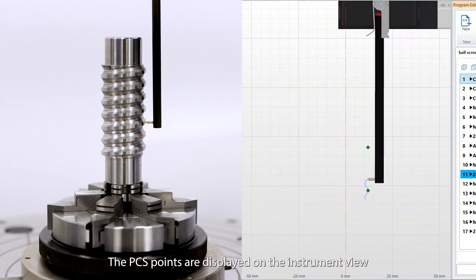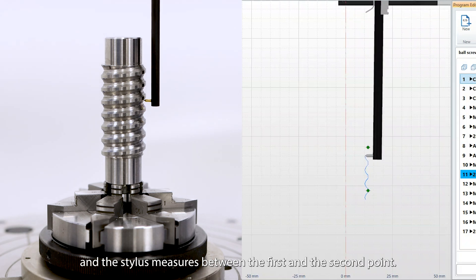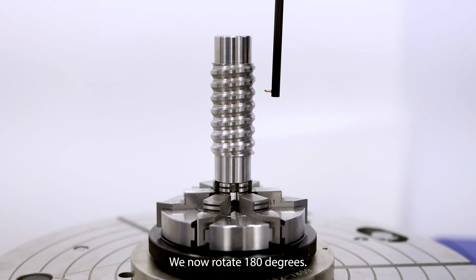The PCS points are displayed on the instrument view and the stylus measures between the first and the second point. We now rotate 180 degrees.